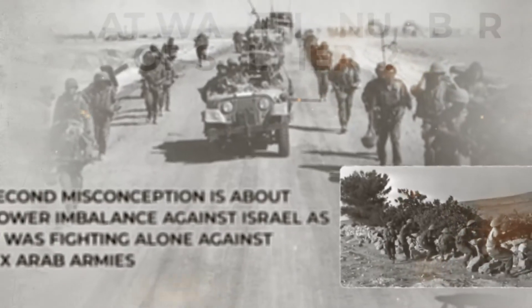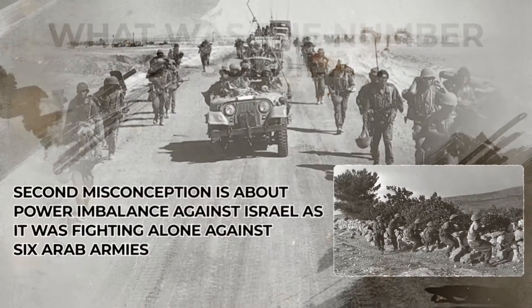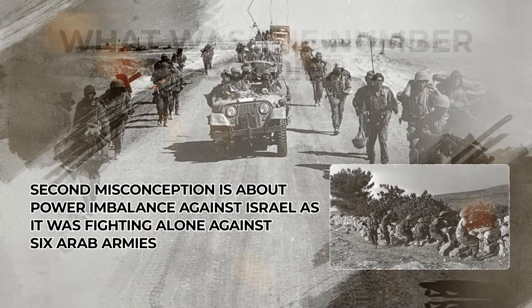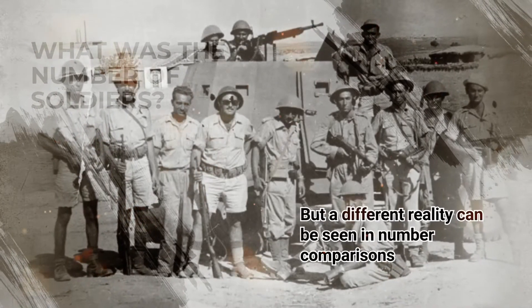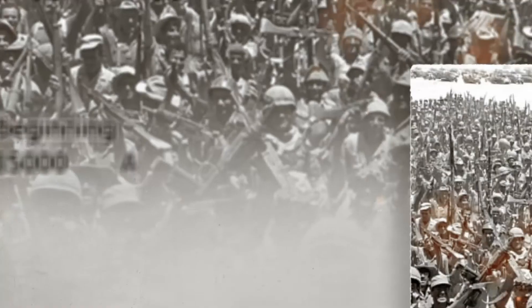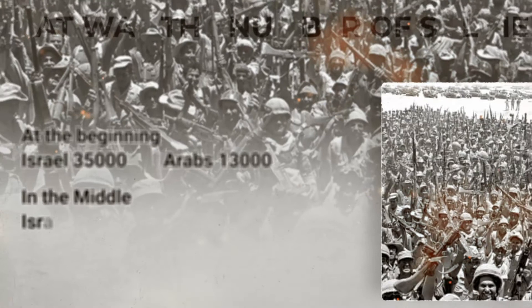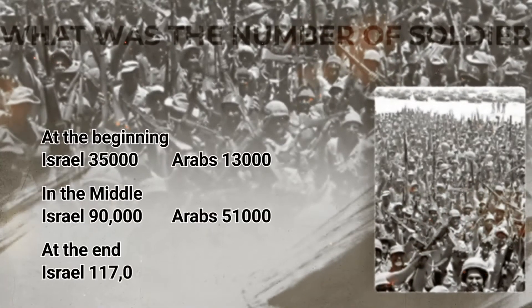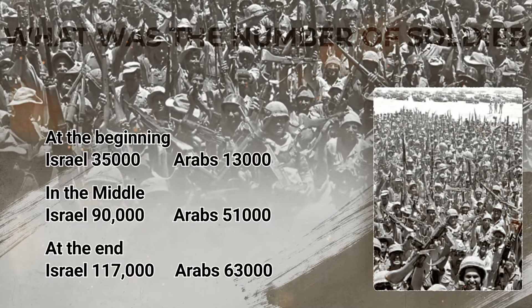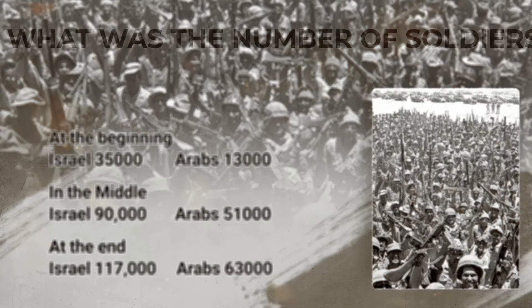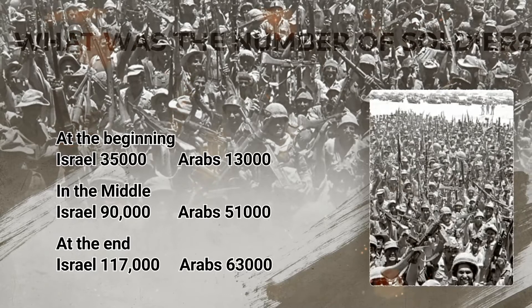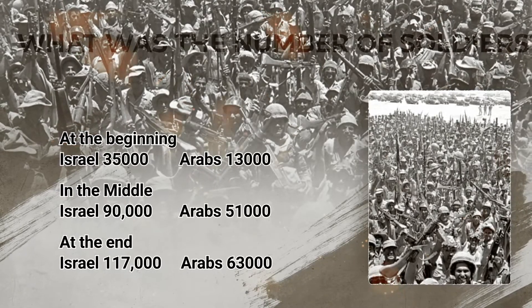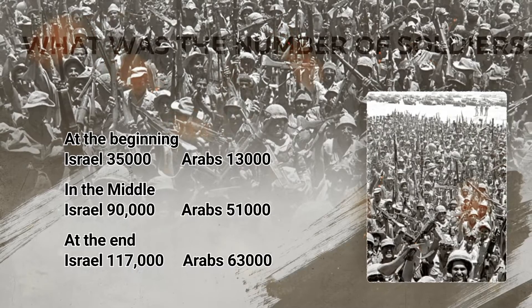A second misconception is about the power imbalance against Israel, as it is supposed that Israel was fighting alone against six Arab armies. But a different reality can be seen in troop number comparisons. At the beginning of the war: Israel had 35,000 soldiers, Arabs had 13,000. In the middle: Israel had 90,000, Arabs had 51,000. And at the end of the war: Israel had 117,000 soldiers compared to Arabs' 63,000.